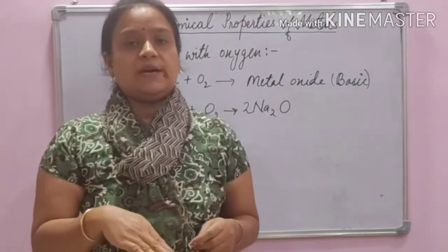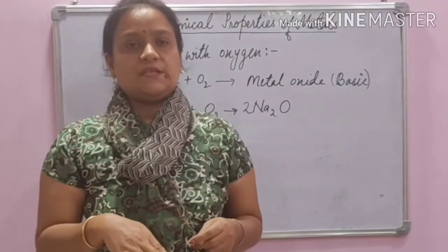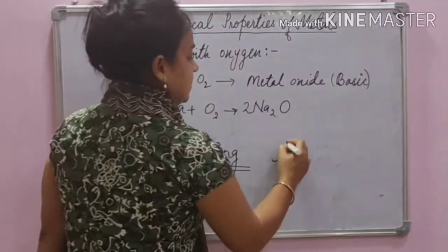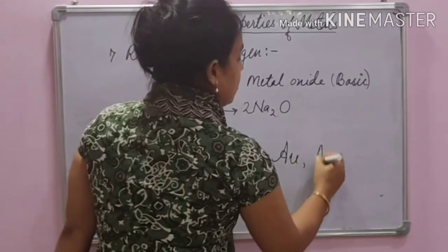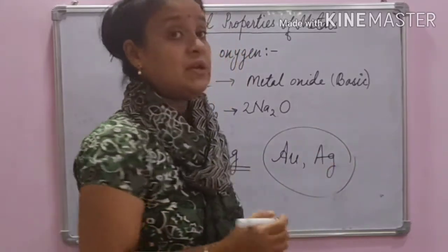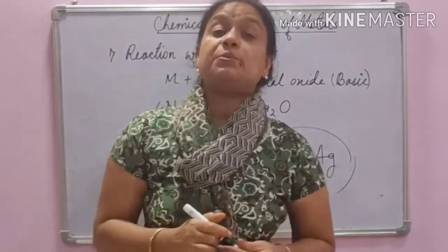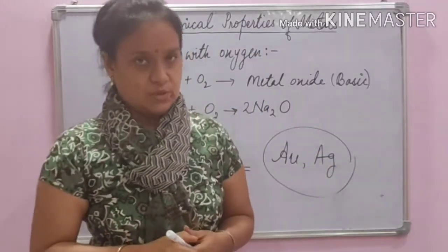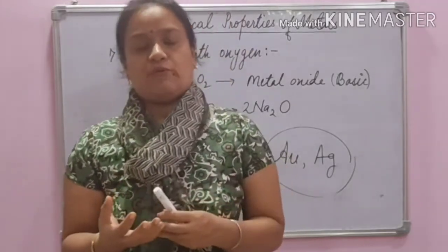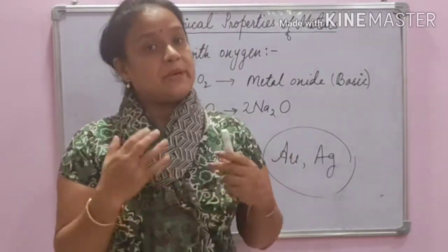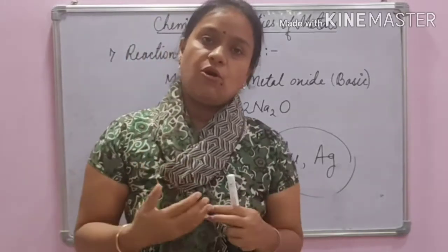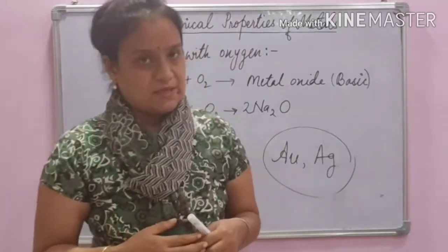If we go further down the reactivity series, we find gold and silver, which do not react with oxygen at all. Even at high temperature, they do not react with oxygen. Metals react with oxygen to form oxides, but this reaction depends upon the reactivity of the metals.